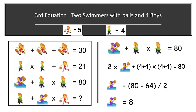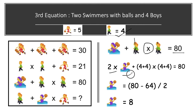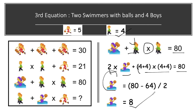In the third equation, we have two swimmers with balls and four boys — one, two, three, four — with a multiplication sign between them, equal to 80. We know the value of boy is 4. So that becomes 2 times swimmer with a ball, plus (4 plus 4) times (4 plus 4), equal to 80. Solving: swimmer with a ball equals (80 minus 64) divided by 2, which is 8.